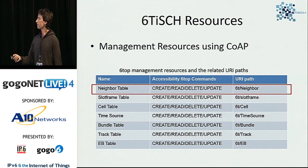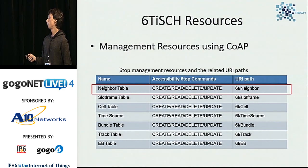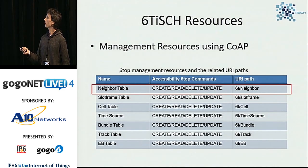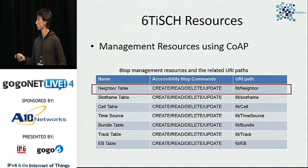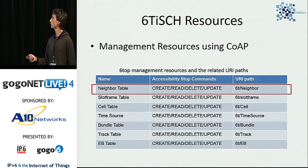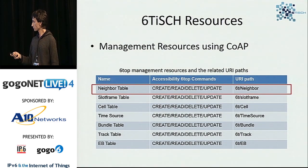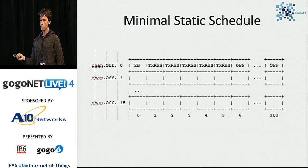Another draft we are working on explains how, using CoAP, we can manage the resources of a node. This is a simple approach based on a REST API. Each node offers a set of URIs used to configure it. For example, to query the neighbor table of a node, you call a REST operation with GET, PUT, or POST and receive the corresponding answer. We are defining these URIs to interact with the nodes.